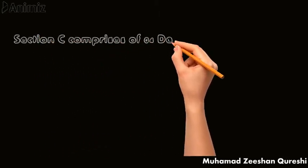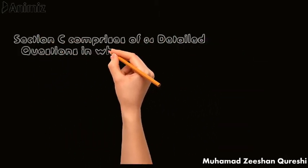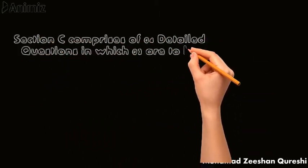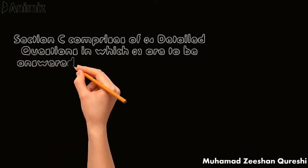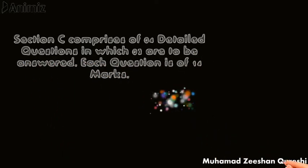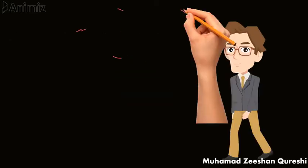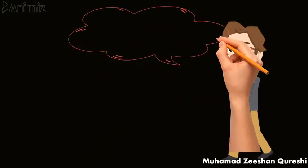Now what about Section C? Section C comprises 4 detailed questions, and you have the choice to attempt any 3 of these questions. Each question is of 14 marks.